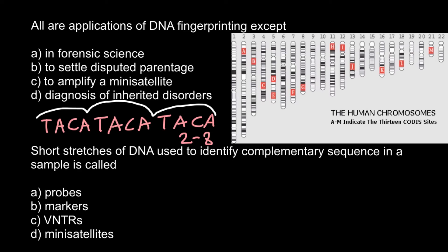Different combinations are possible for these 13 loci, and we can get totally unique combinations of numbers — so unique that the variation exceeds the population of our planet. So if we make a DNA profile for any person, whether victim or suspect, we can be sure there is no other person with the same DNA profile, probably except for a twin brother or sister.